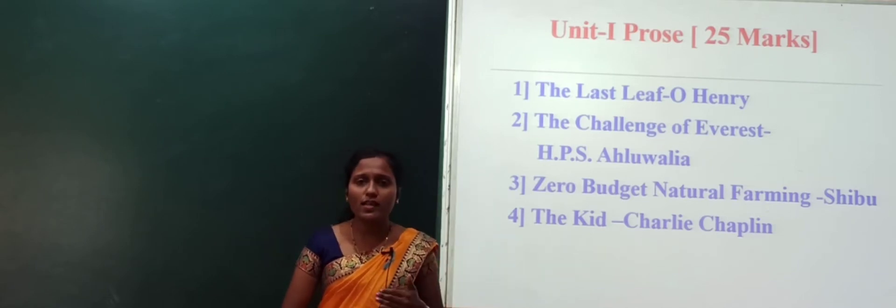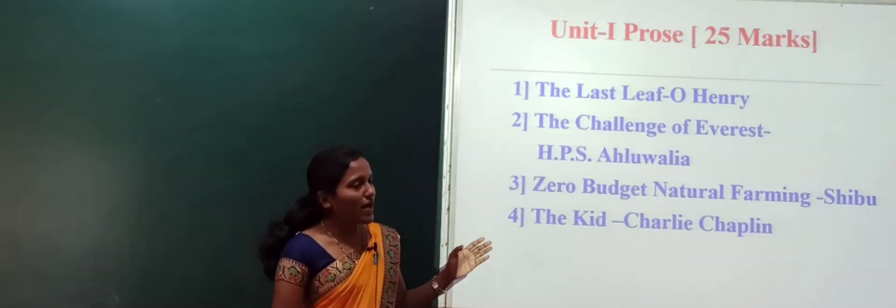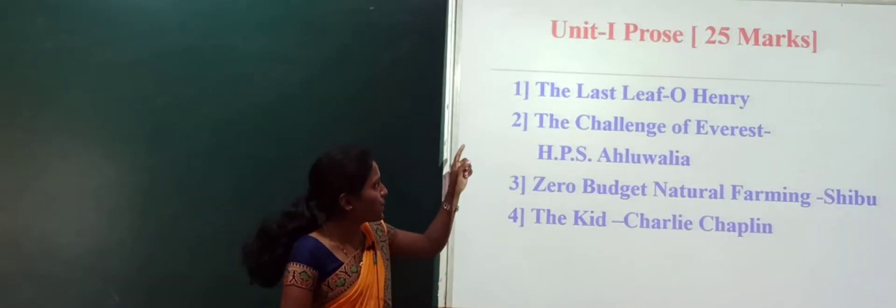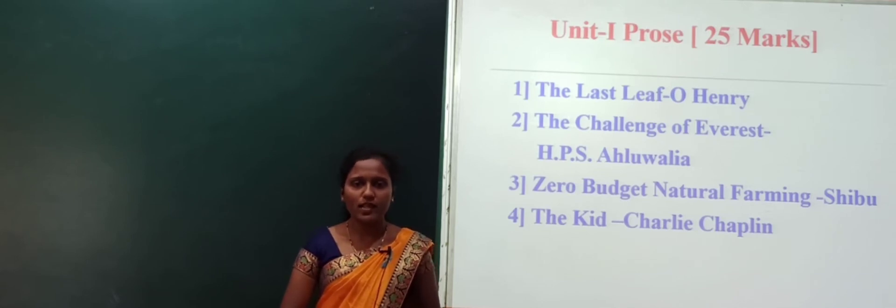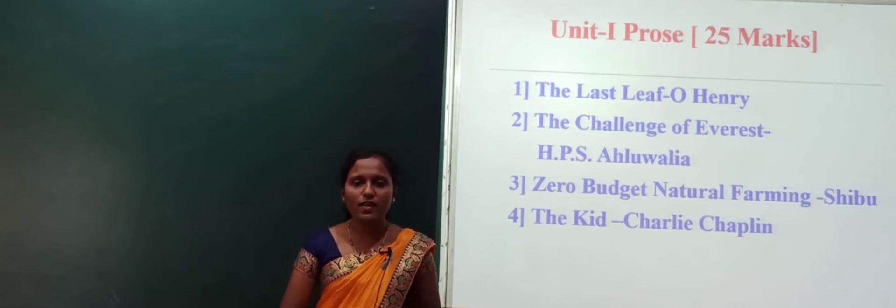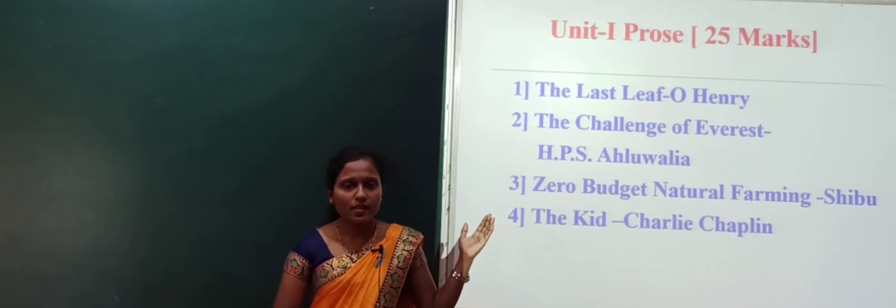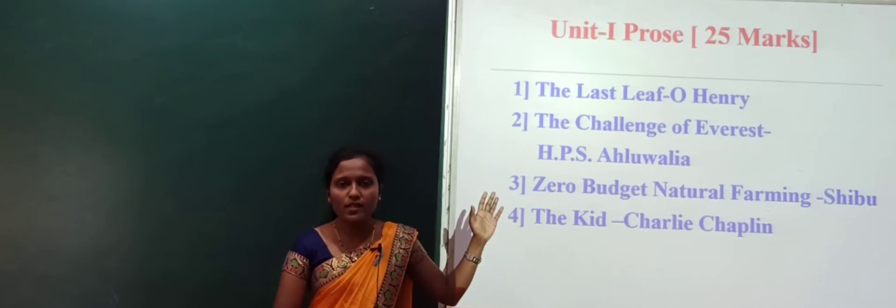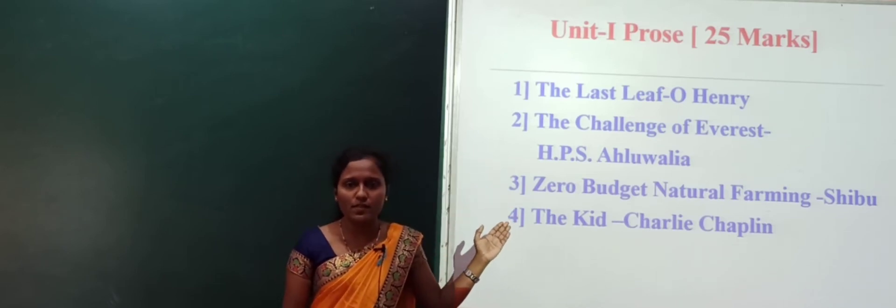In the first unit you are going to learn prose. This prose session contains 25 marks. What you are going to study: the first lesson is The Last Leaf, a prose written by O. Henry. Second, The Challenge of Everest, written by H.P.S. Ahluwalia. Third, Zero Budget Natural Farming, written by Shibu. And fourth, The Kid, written by Charlie Chaplin. These four prose lessons are in unit first, totaling 25 marks.